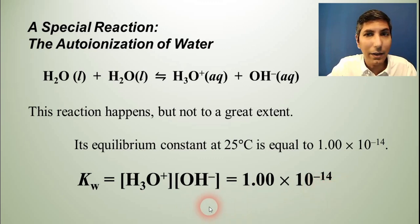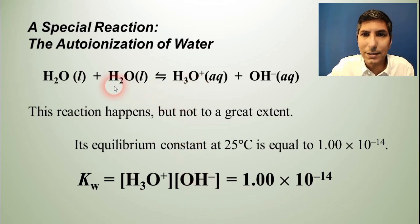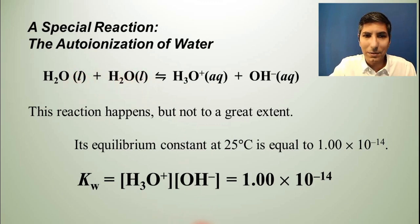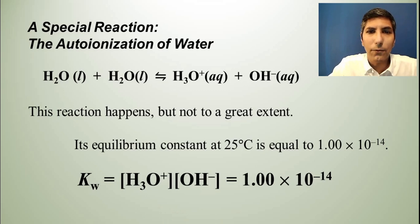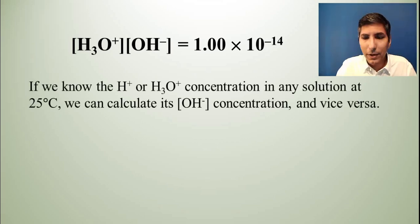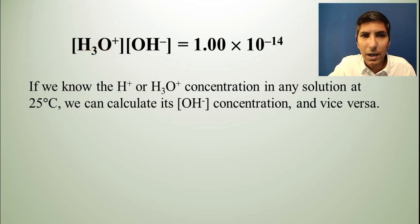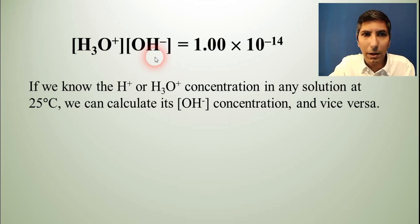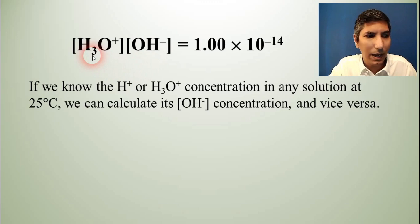Notice this is written just like any other equilibrium constant expression — products over reactants raised to the power of the coefficients. Water is a liquid so it is omitted, which is why nothing appears in the denominator. What this means is that if we know the hydronium ion concentration in any solution at 25°C, we can calculate the hydroxide concentration, and vice versa.